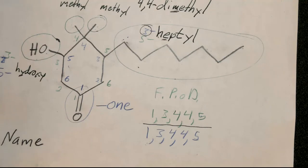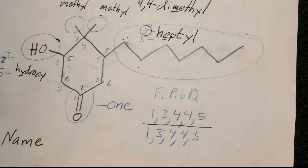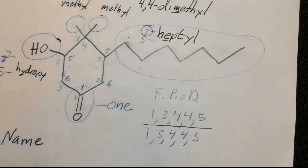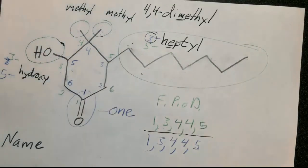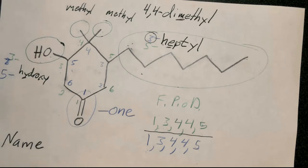Once you determine that one direction minimizes the functional group locant, that usually narrows it down. There are some symmetrical molecules where either direction gives the same functional group locant number, but except for those rare exceptions, it usually resolves the numbering. Then you don't even need to worry about first point of difference or the alphabetical locant rule.